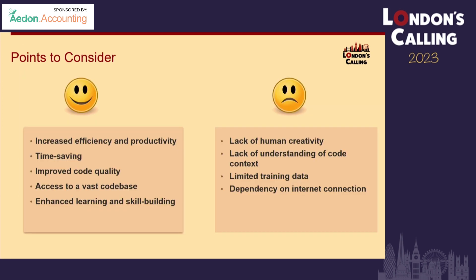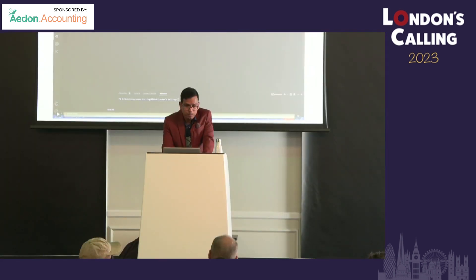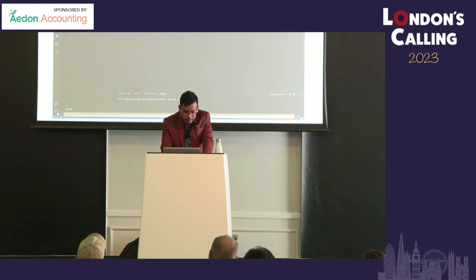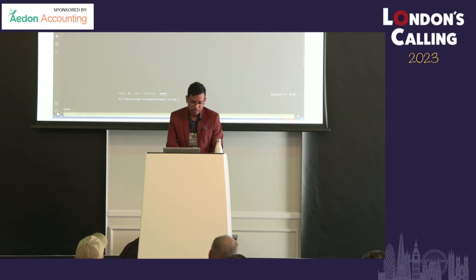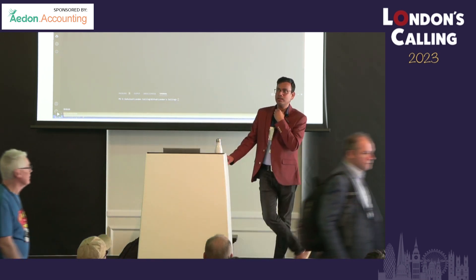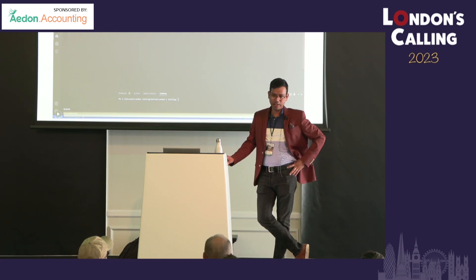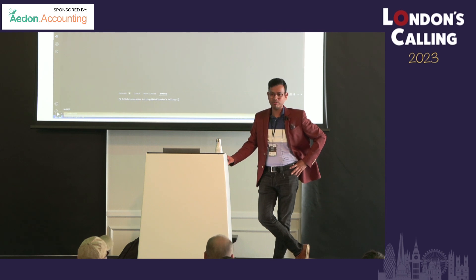An audience member asked how up to date Copilot is, given developments in the self-operated system space over the past two years. As everybody knows, OpenAI is trained till 2021, so it will be suggesting details from up to 2021. There is a new version coming called GitHub Copilot X, which will be trained on GPT-4 and will be more relevant up to 2022, though it still has some limitations.